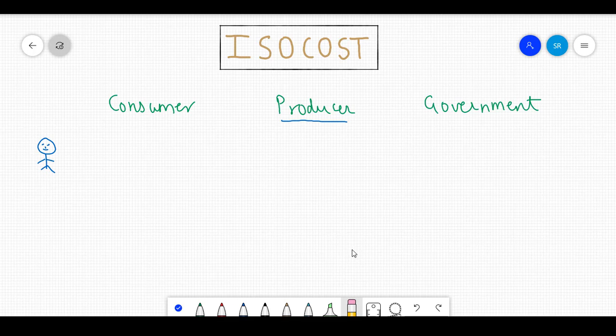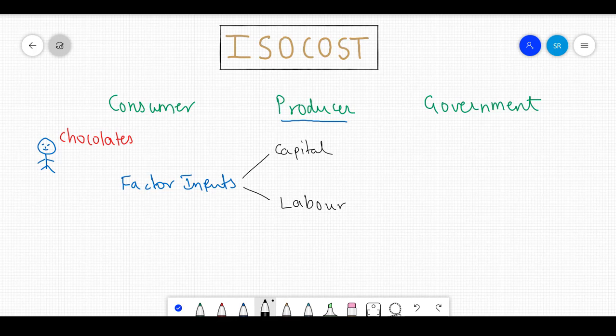Let's think of you being a producer of chocolates. To produce the output of chocolates, you would require factor inputs, i.e., a few labourers and capital. However, as you know, these factor inputs come at a cost.